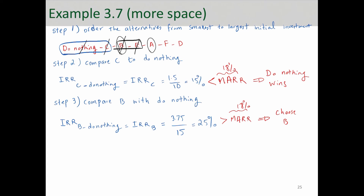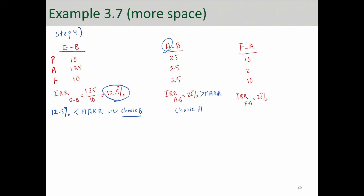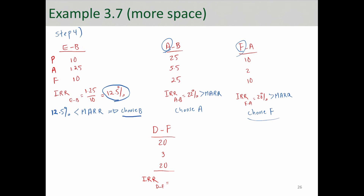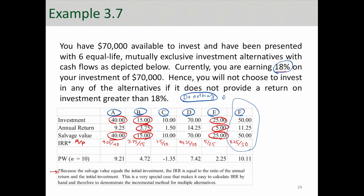Next we compare A versus F. The IRR of F minus A is 20%, which is greater than MARR, so we choose F and rule out A. The final comparison is F versus D. The IRR of D minus F is 3 over 20, which is 15%. Since 15% is less than the MARR of 18%, we choose F. The ultimate winner across all alternatives is alternative F.